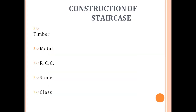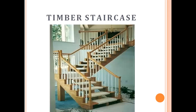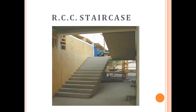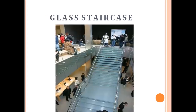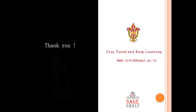The various materials used for construction of stairs are timber, metal, RCC, stone, and glass. Here we see the timber staircase, the metal staircase, the RCC staircase, and the stone staircase. In ancient times, stone was mostly used for stairs. These are glass stairs — in modern times, glass stairs are also being used. Thank you, students.